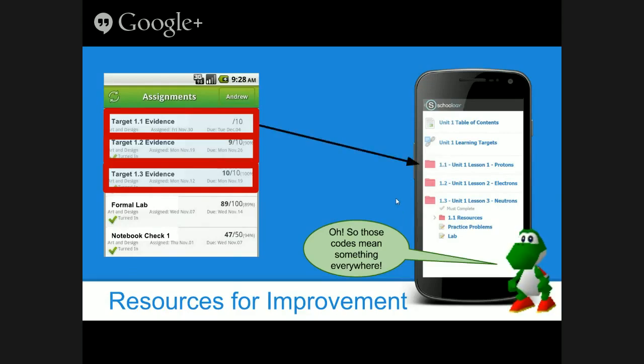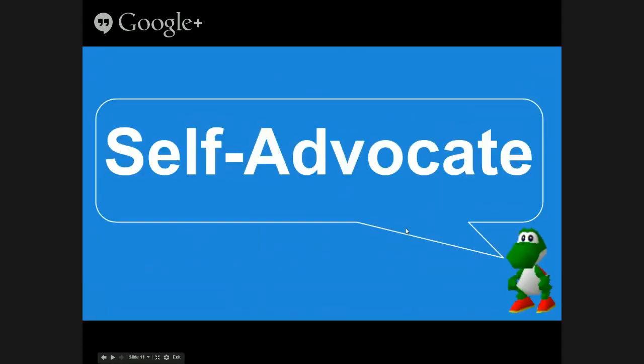Learning target evidence 1.1 goes with unit folder 1.1, target evidence 1.2 goes with learning target 1.2 in Schoology, target evidence 1.3, and so forth. Those codes are really important.